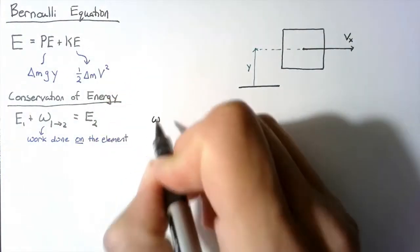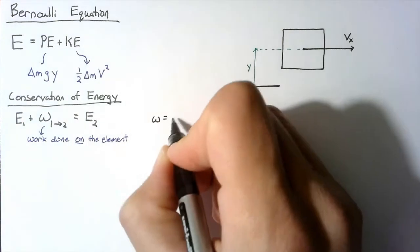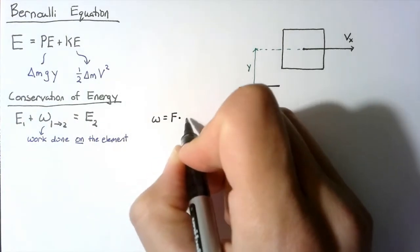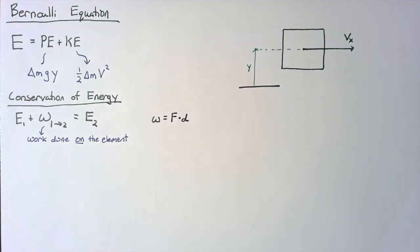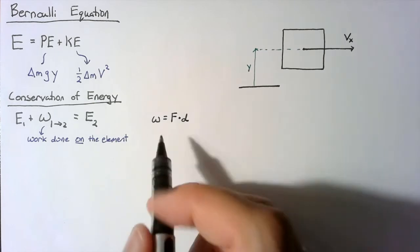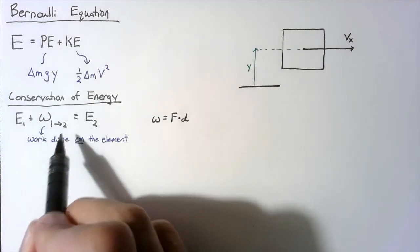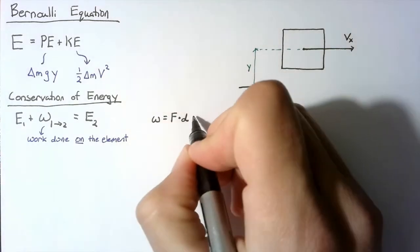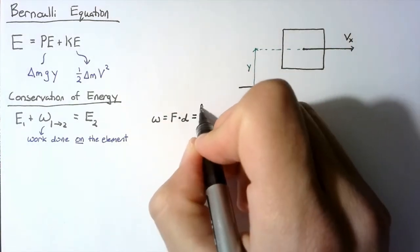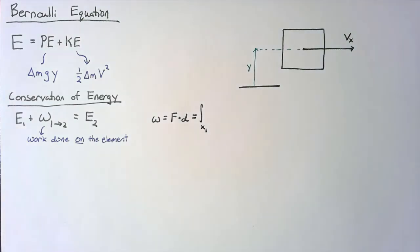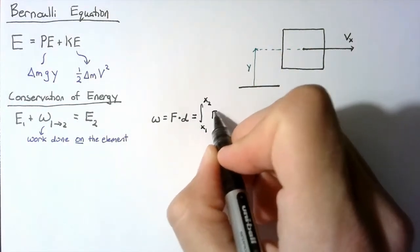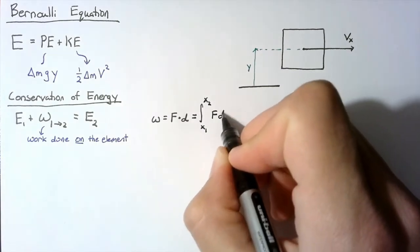Now a reminder, work is simply the force multiplied by the distance in the direction that the force is occurring. We're interested in the total work from one to two, so we're going to write this as the integral from some position x1 to some position x2 of the force multiplied by dx.